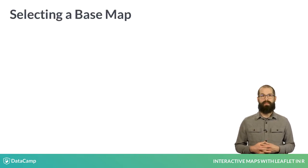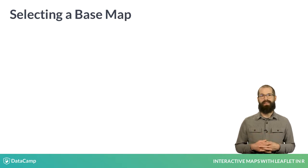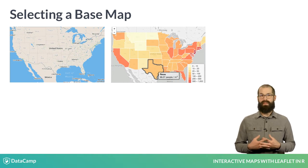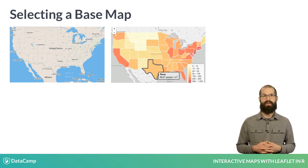In my work, I tend to prefer grayscale maps when plotting data. I find that these maps make it easier for me to distinguish between the data that I'm plotting and the data included with the base map. For example, in the map on the left, the points are similar in color to the features of the base map, like the lakes. Whereas in the map on the right, the data we are plotting is easily distinguishable from the features of the base map.